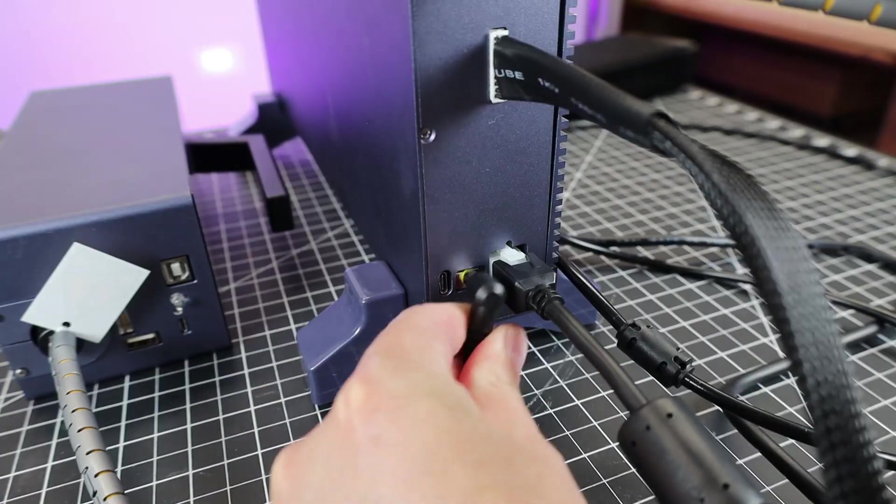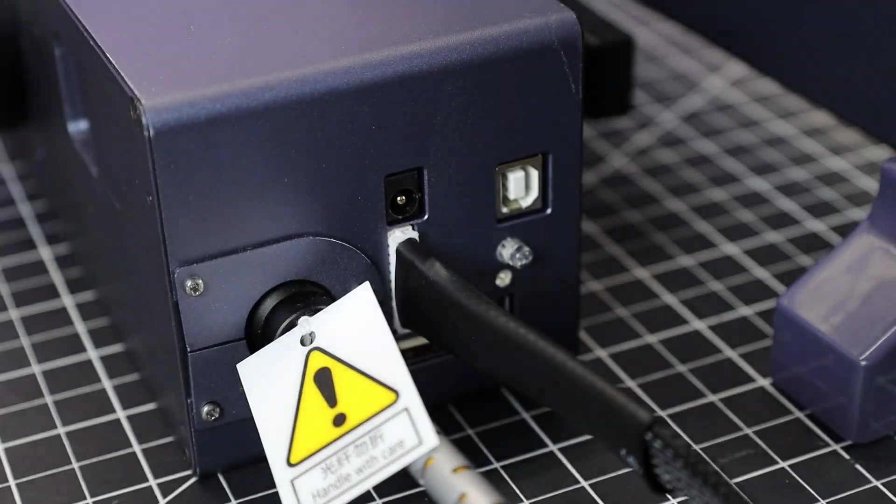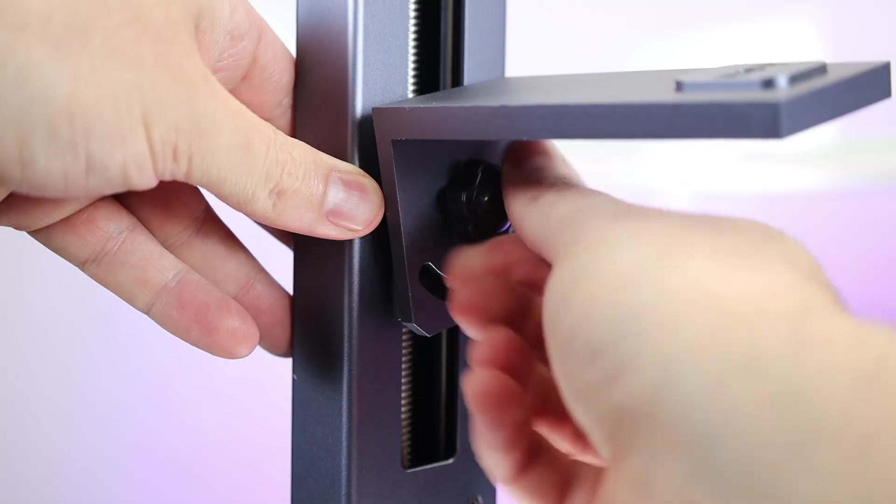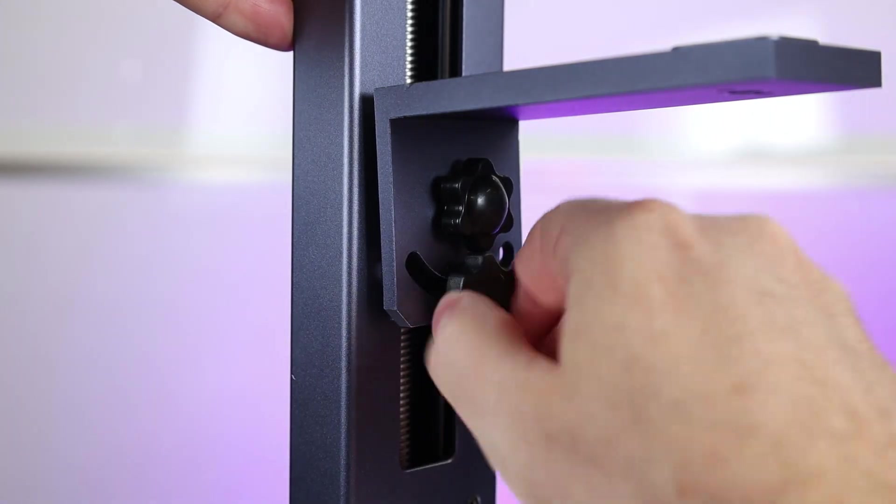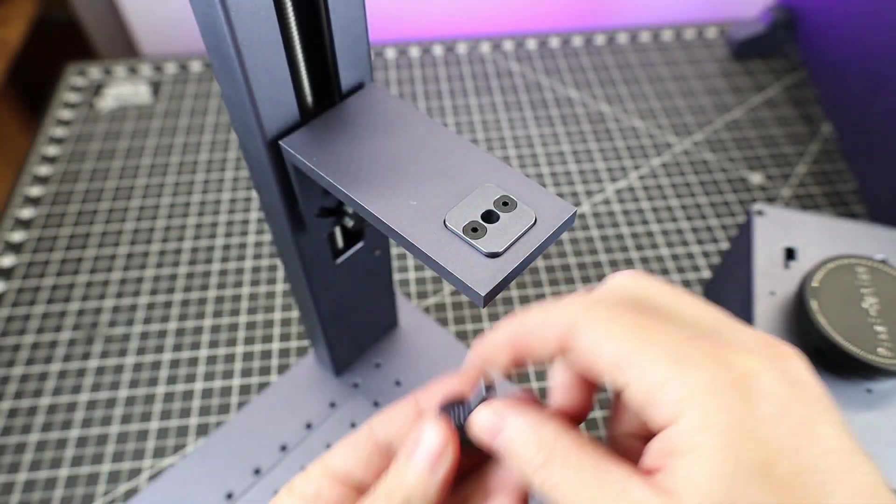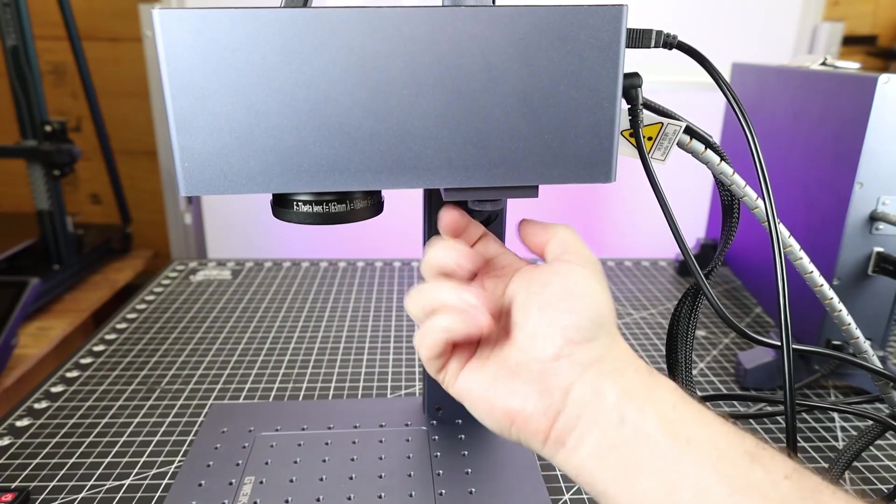So overall, the assembly of this is mostly plugging in wires. And they're all unique, so you can't plug them in the wrong spot. And the rest of the hardware is just assembled with a couple screws that are mostly hand screws, actually. Even the entire laser head is held in with one screw. So it's kind of nice that you don't need tools for this.